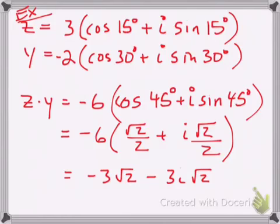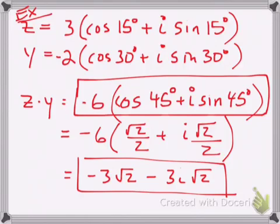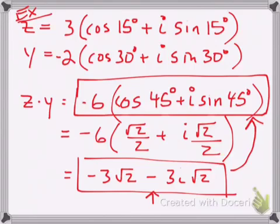There are two answers: the answer in polar form and the answer in rectangular form. You need to be able to express one in terms of the other. Changing a number from polar form back to standard form is easy — you just do the math. I used a nice round number here so we could get exact values. If the angle were something like pi over 7, we'd need a calculator for that.